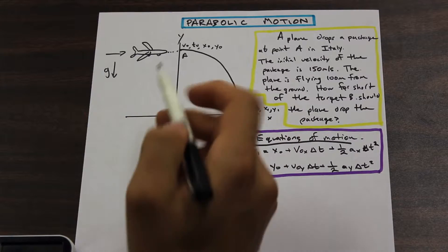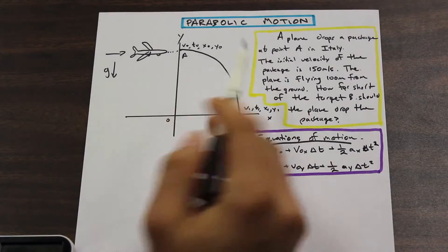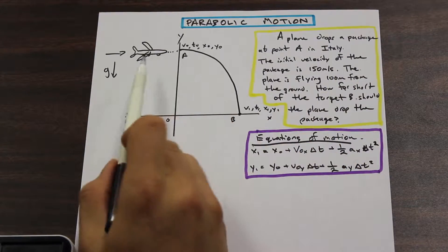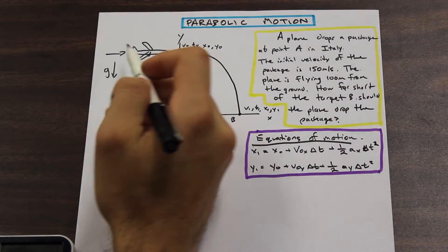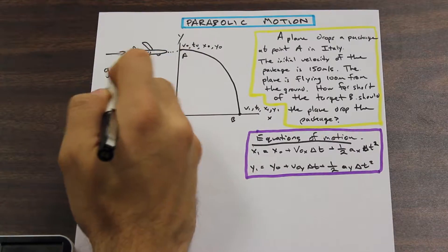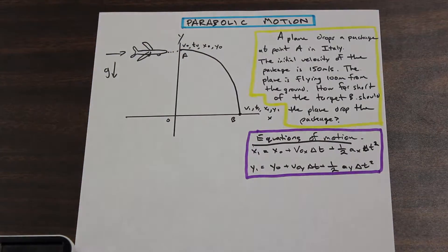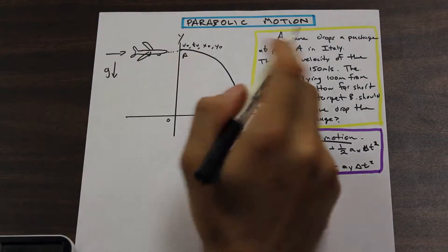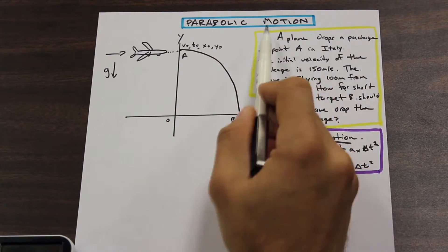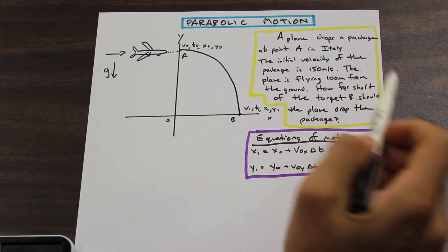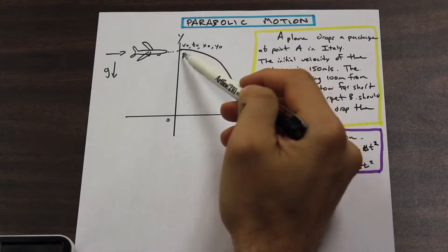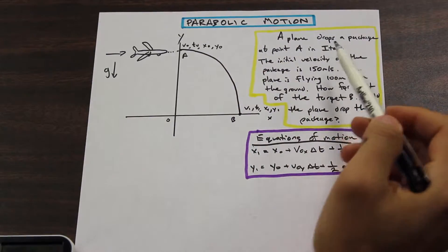So we have a plane here, and the plane is moving in the positive x direction. I just drew an arrow here showing you which direction the plane is moving. The plane is going to drop a package. So let's read the question first.